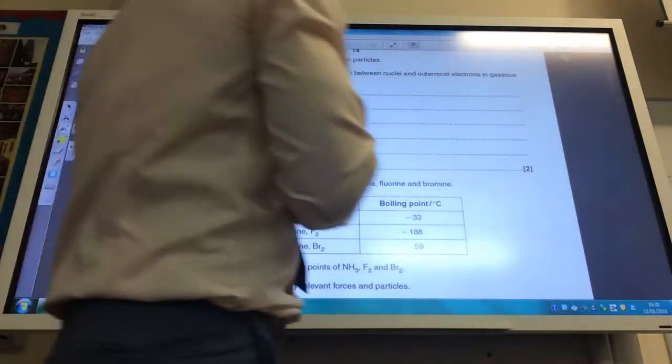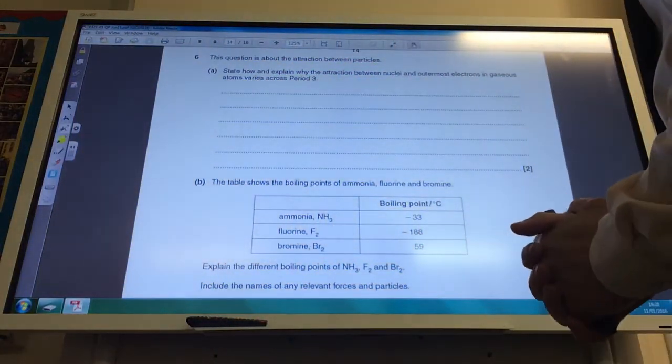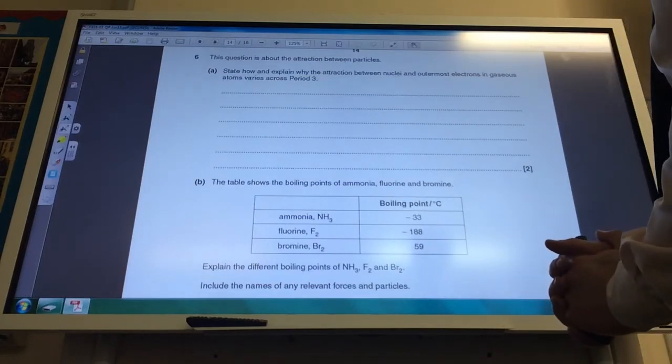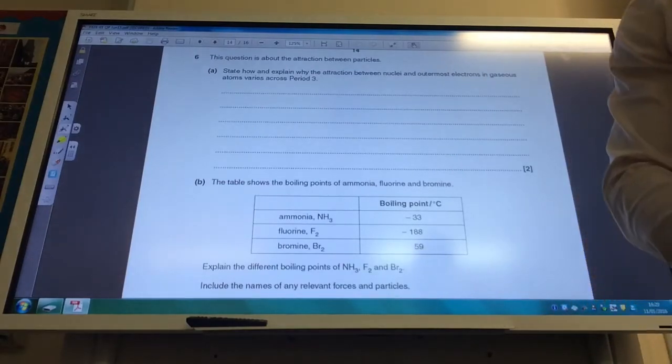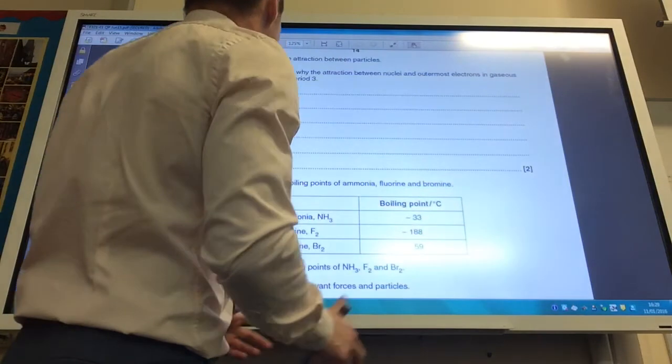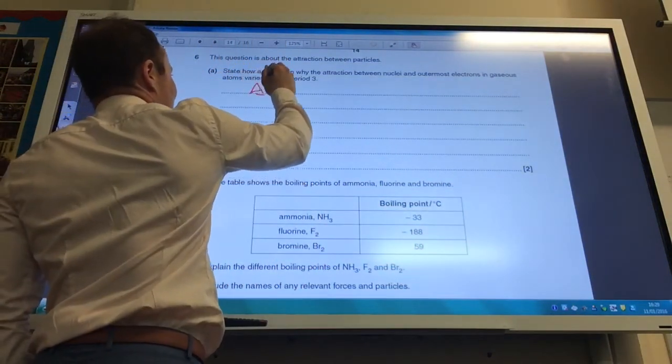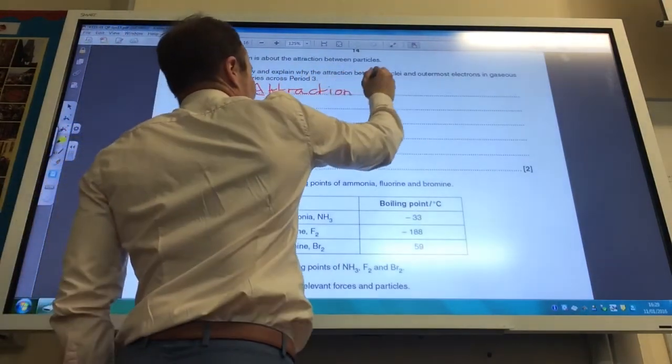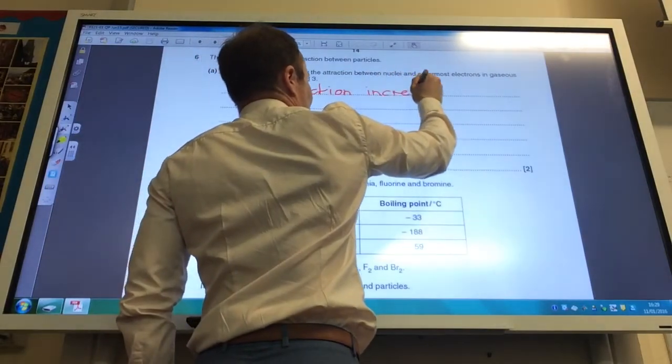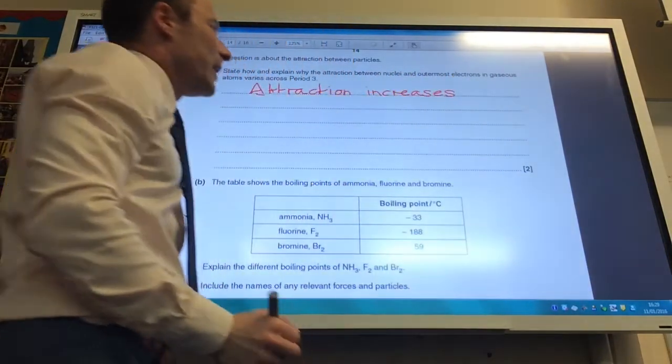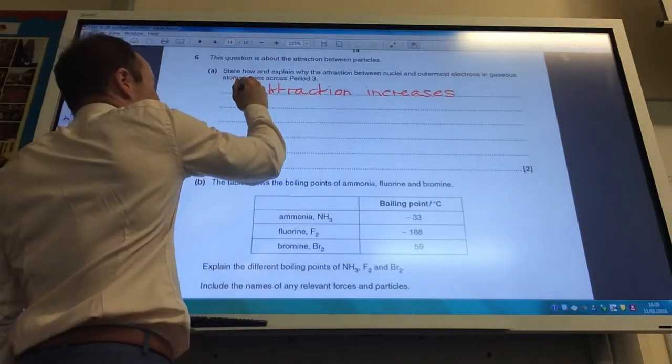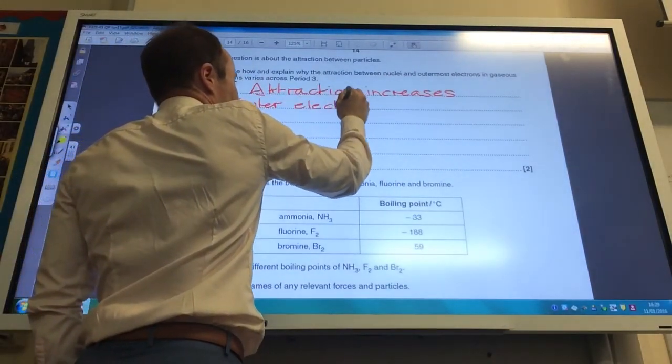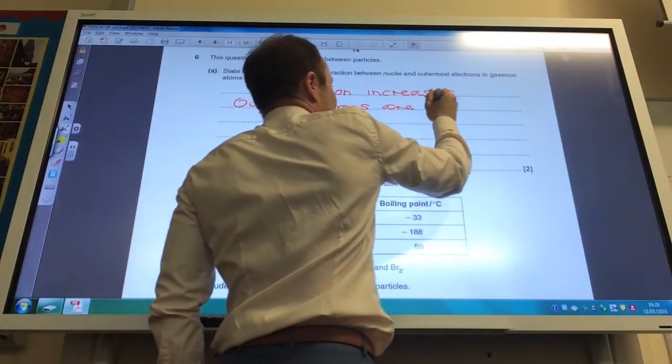Right, final question. This is about the attraction between particles. State and explain why the attraction between nuclei and the outermost electrons in gaseous atoms varies across period 3. Well, first of all, if I'm going across period 3, the attraction increases. So we're saying attraction increases. Now, why will the attraction increase? It's because the outer electrons are added to the same shell.